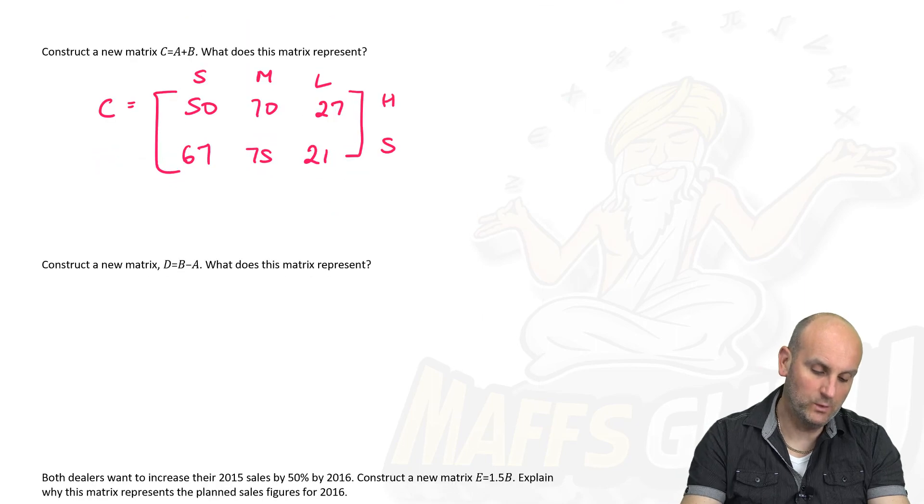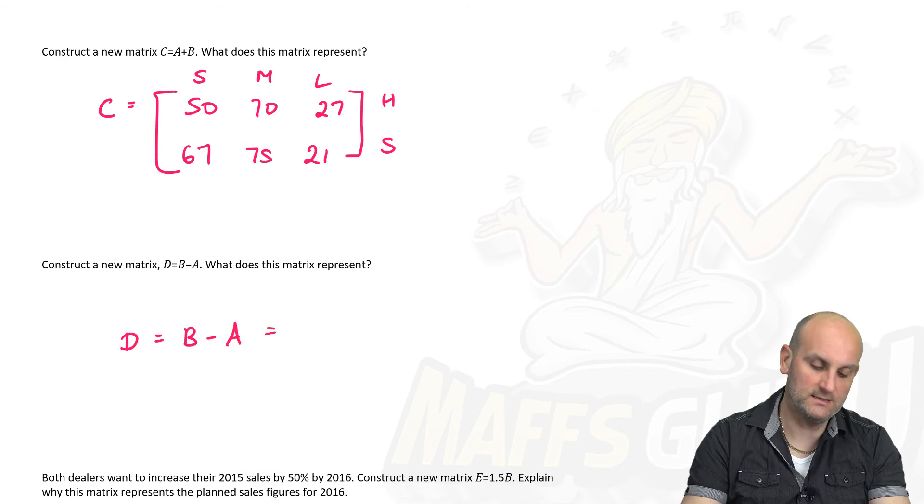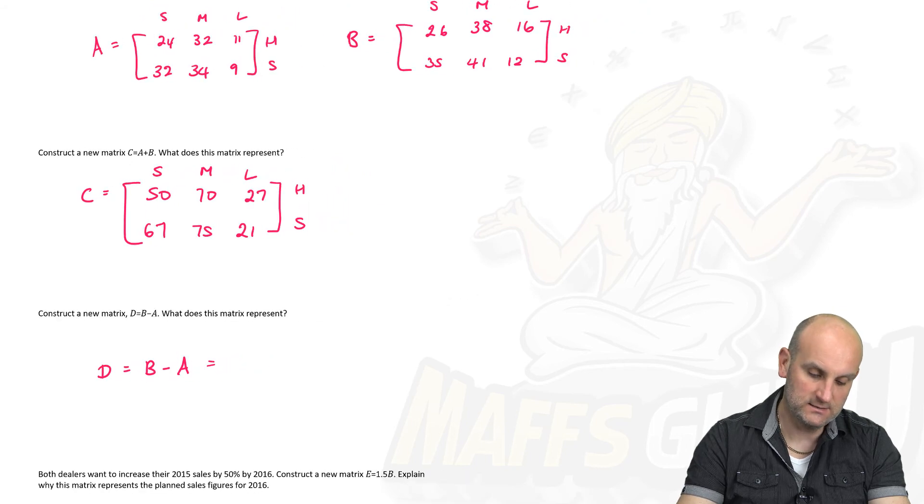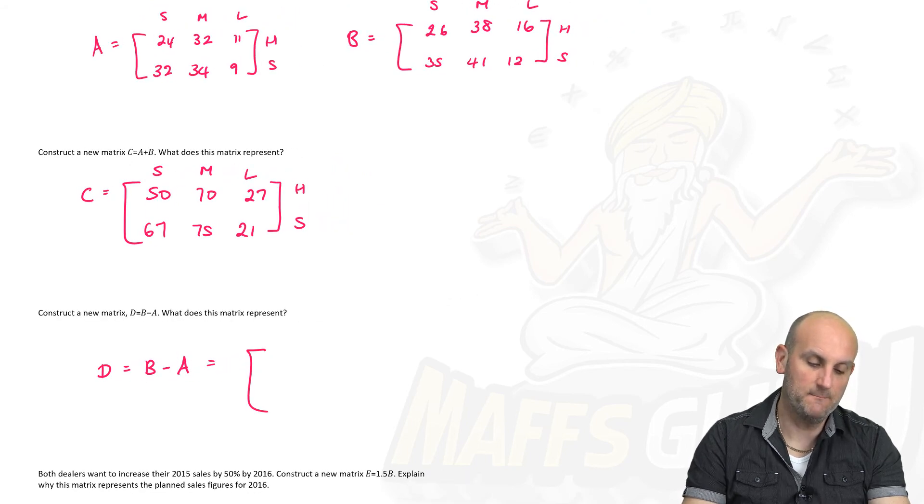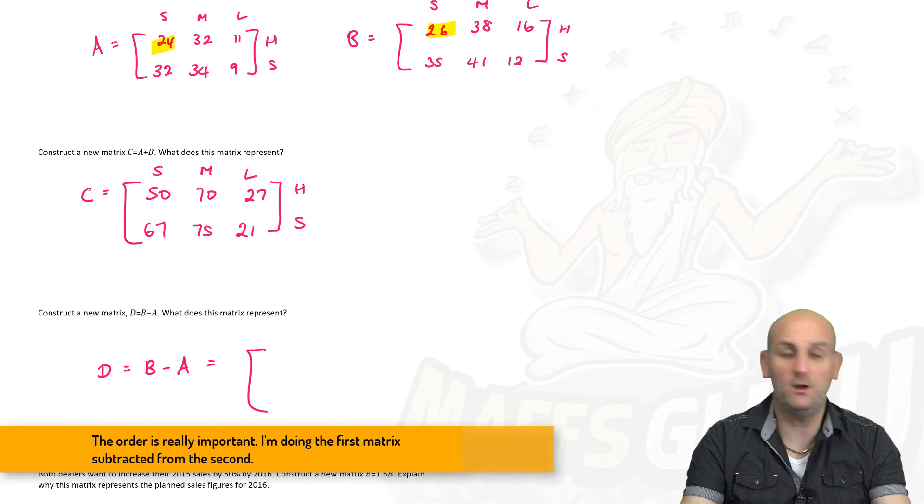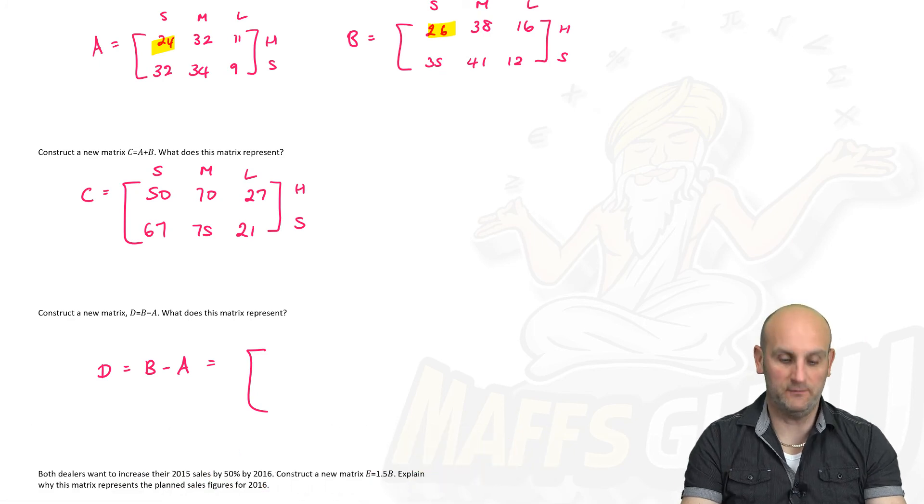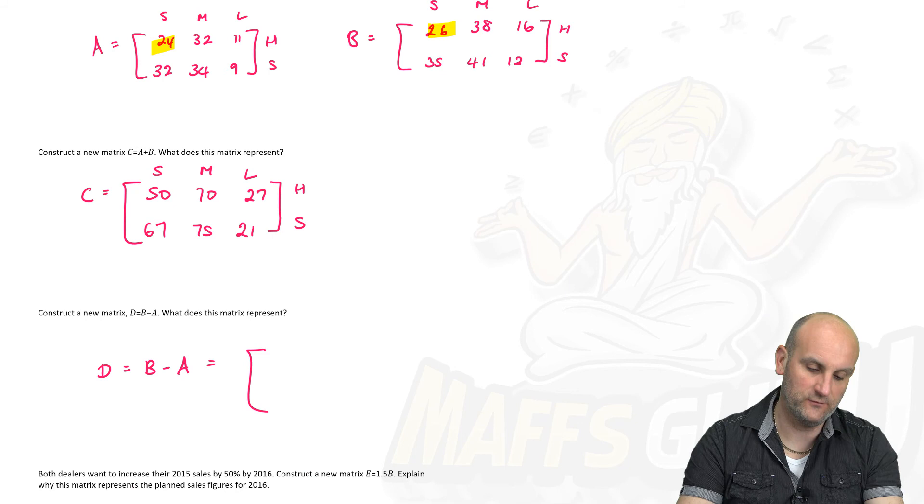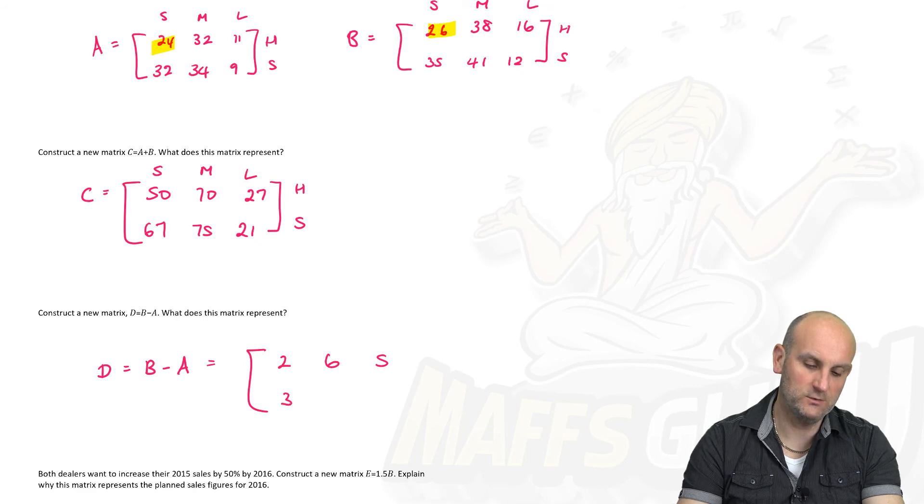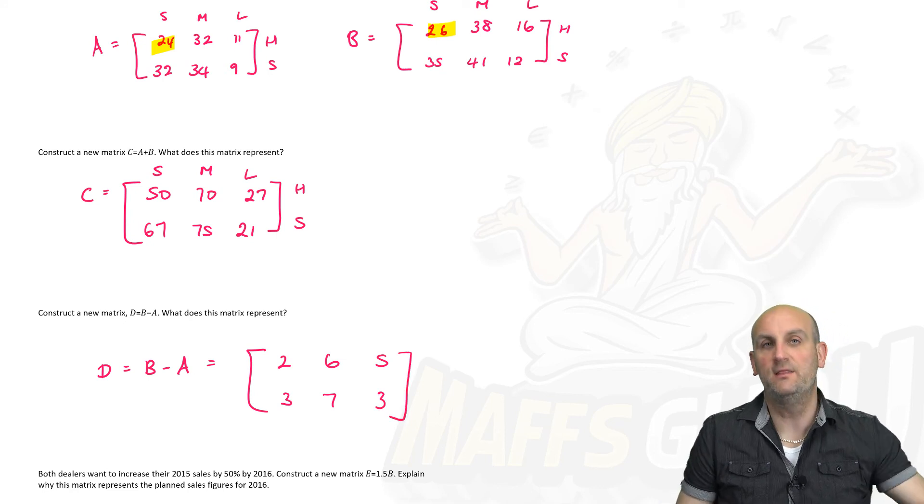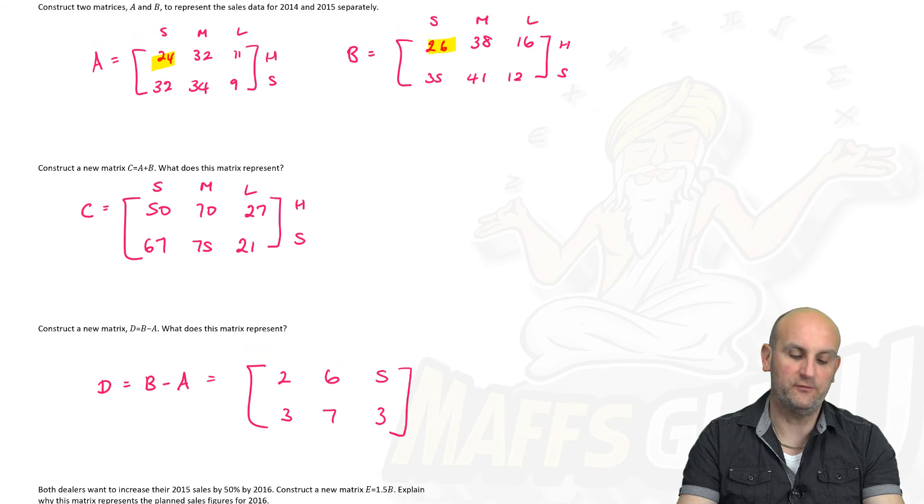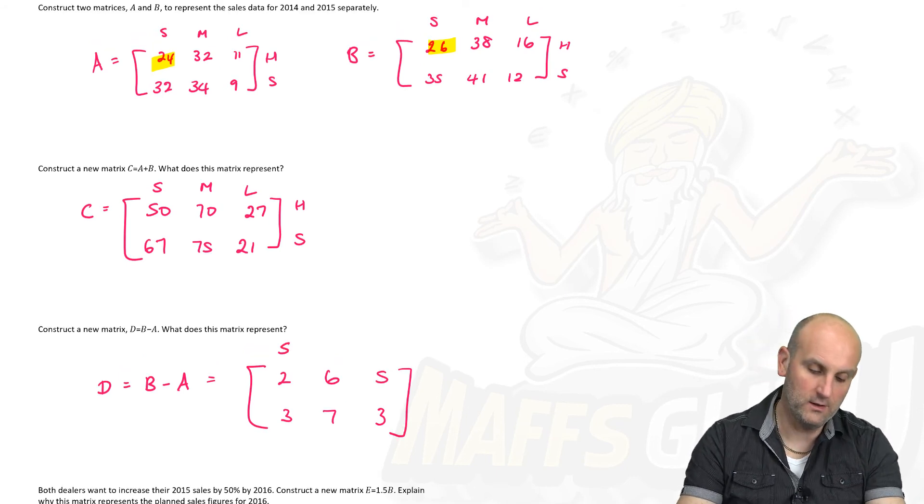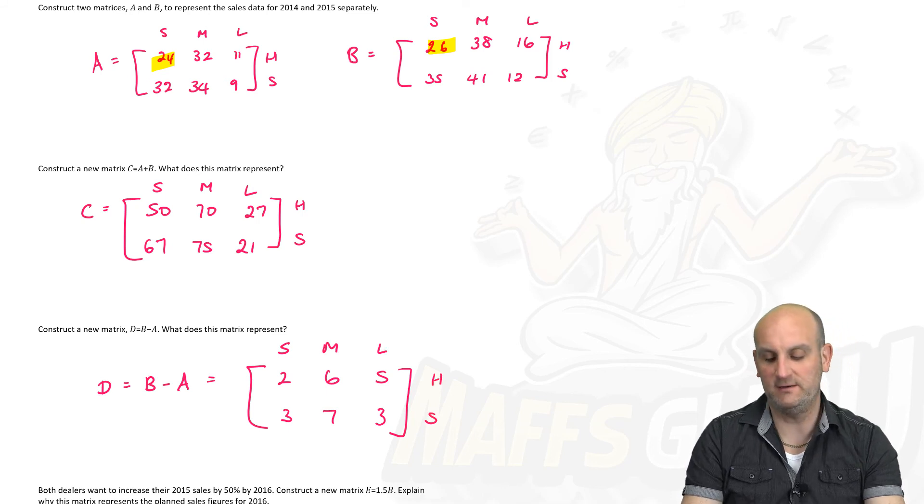Construct a new matrix D, which is B minus A. Okay. So, we want D, which is B minus A. So B minus A. Let's shrink this down a bit so I can see two of them. So, we are now going to do B minus A. So, 26 minus 24. Remember, I'm doing this. 26 minus 24. And you guys could absolutely write this out. It's totally up to you to write it out and then it would probably make it a bit easier to see. So, 26 minus 24 is 2. 38 minus 32 is 6. 16 minus 11 is 5. 35 minus 32 is 2. 41 minus 34 is 7. And 12 minus 9 is 3. And it says, what does that represent? Well, again, this is going to be the difference in sales between each of the years for each of the car brands. So, we've got small, medium and large. And we've got Honest Joes and Super Deals. Basically, what this now shows is for this situation here, that Honest Joe sold five more large cars in 2016 than he did in 2015 than he did 2014.